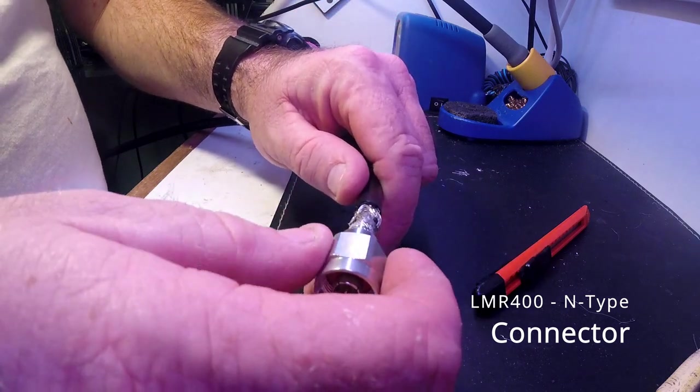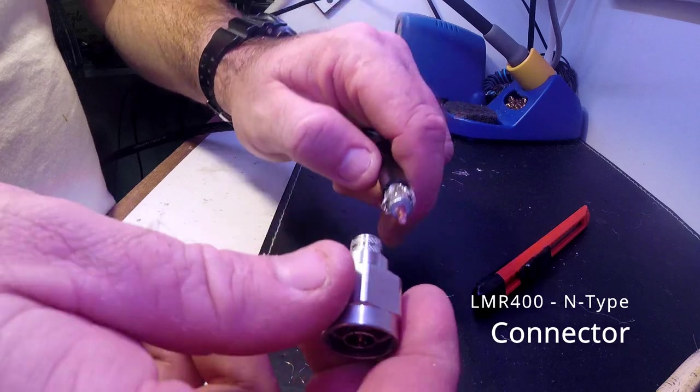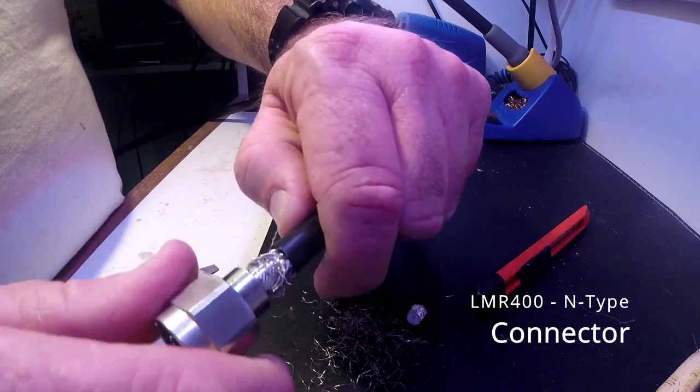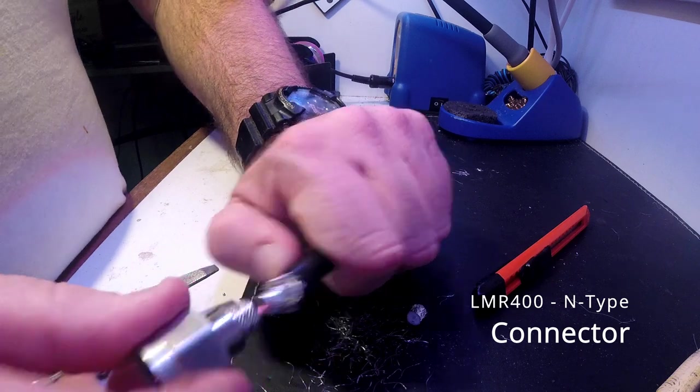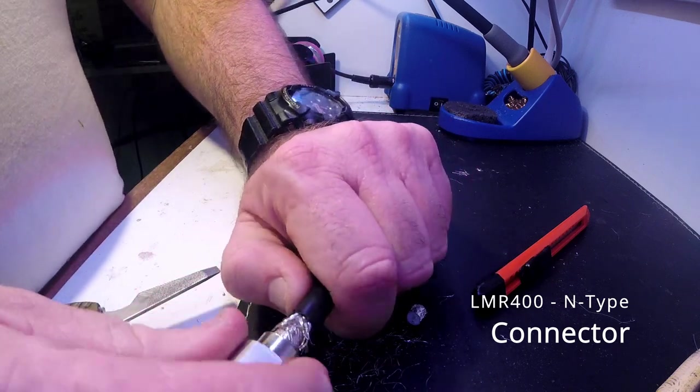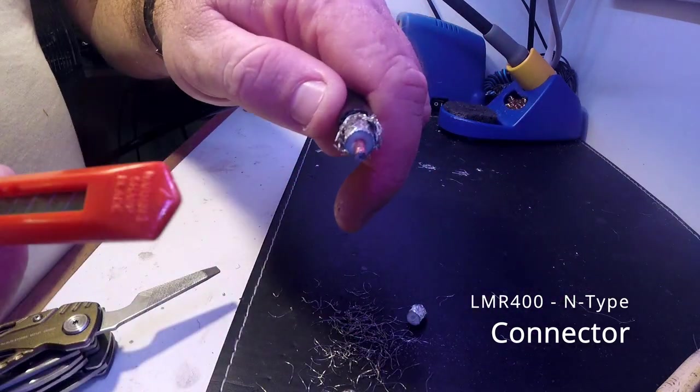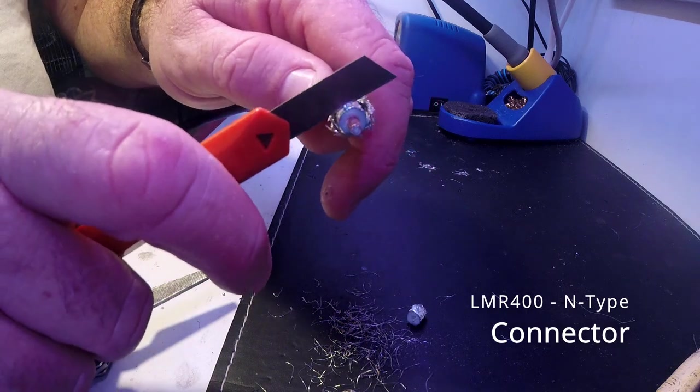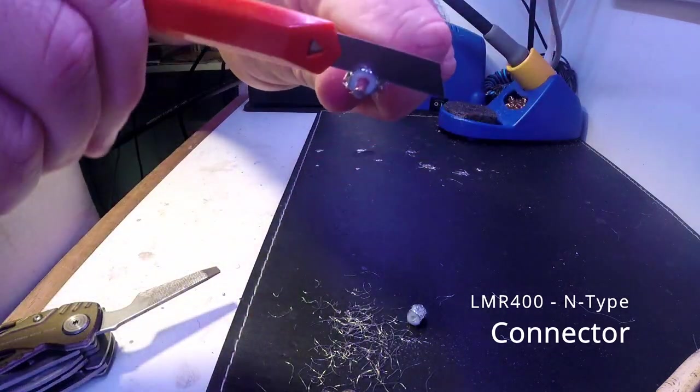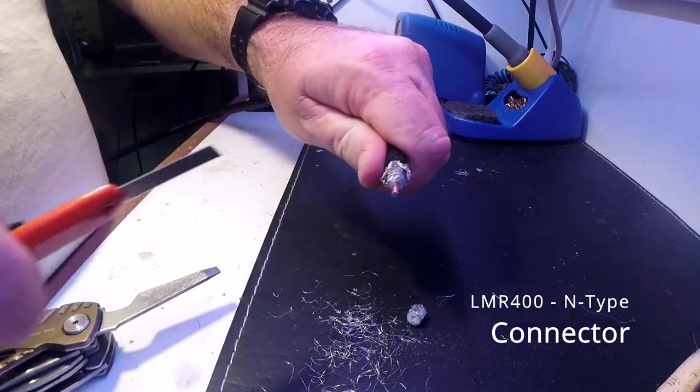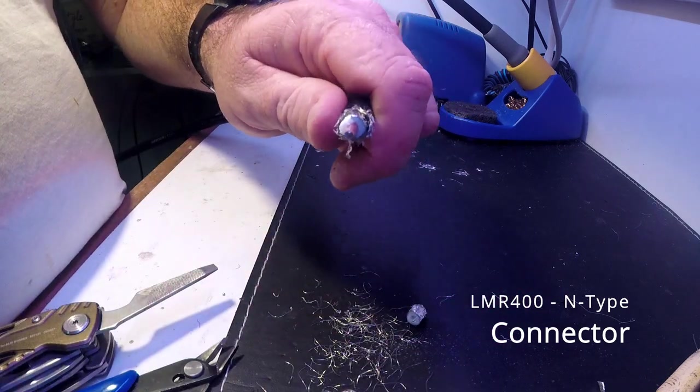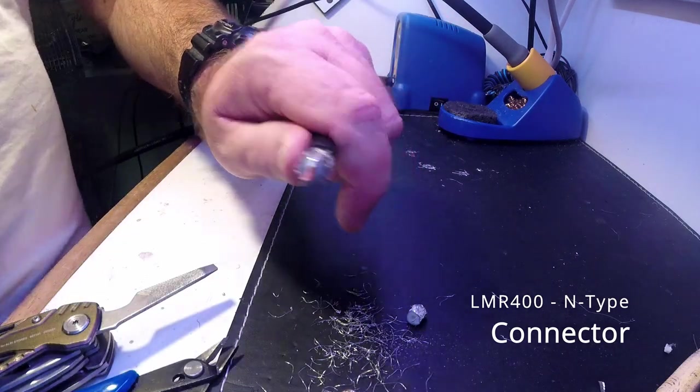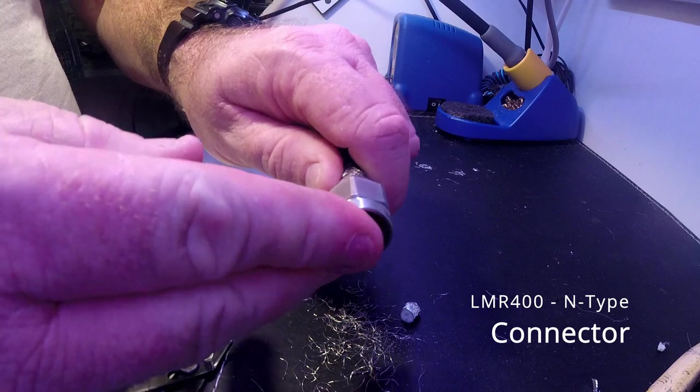And then we can push the connector on, making sure the braid goes on the outside of this section. And I can feel that it's already hard up. You can feel it go click. Probably need to cut a little bit more off. That's definitely hard up.